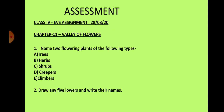So children, write down the answers to these questions in your notebook. Name two flowering plants of the following types: trees, herbs, shrubs, creepers, and climbers. Question number two: draw any five flowers and write their names. Write down these answers in your notebook and learn the answers with their spellings. That's all in today's class. Thank you.